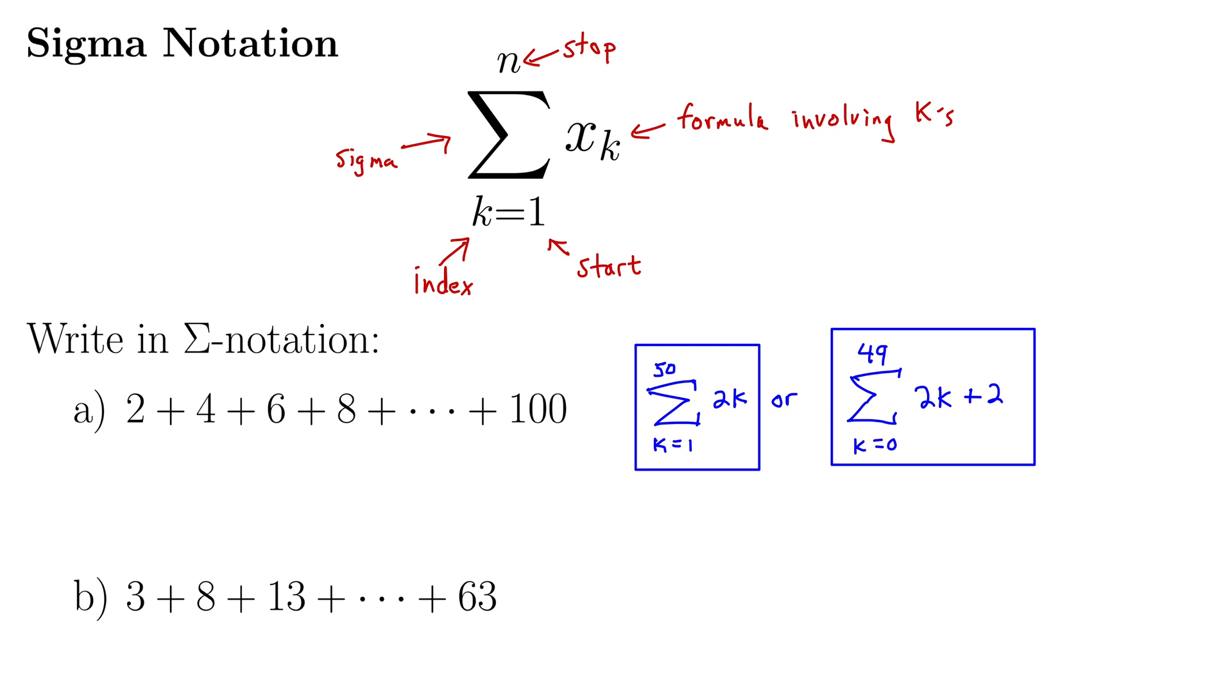It would. So let's do part b: 3 plus 8 plus 13 plus dot dot dot plus 63. Let's start this one at k equals 1. Why don't you pause the video and try this out on your own? See if you can fill out the rest of that sum using the sigma notation.